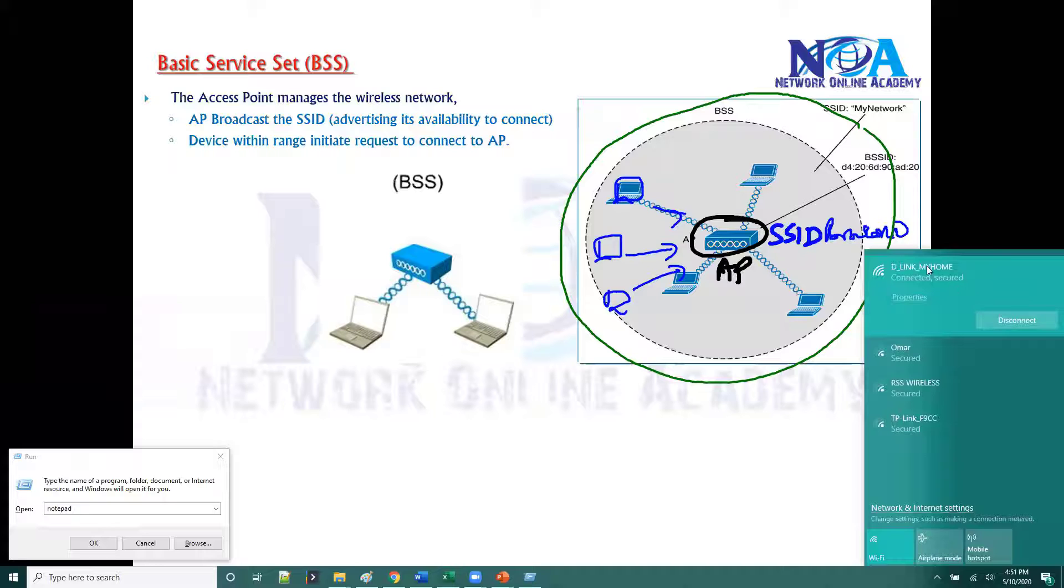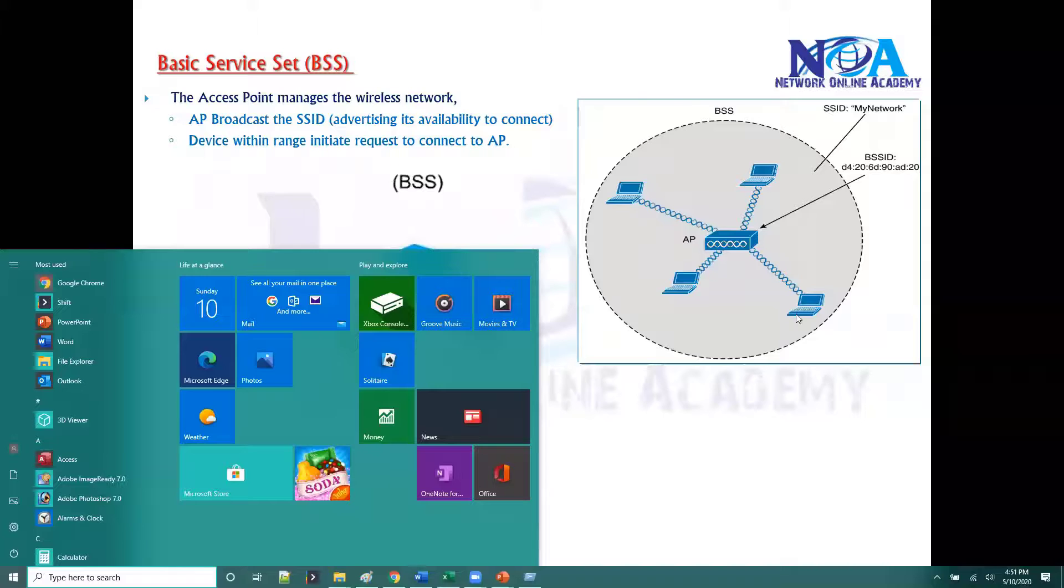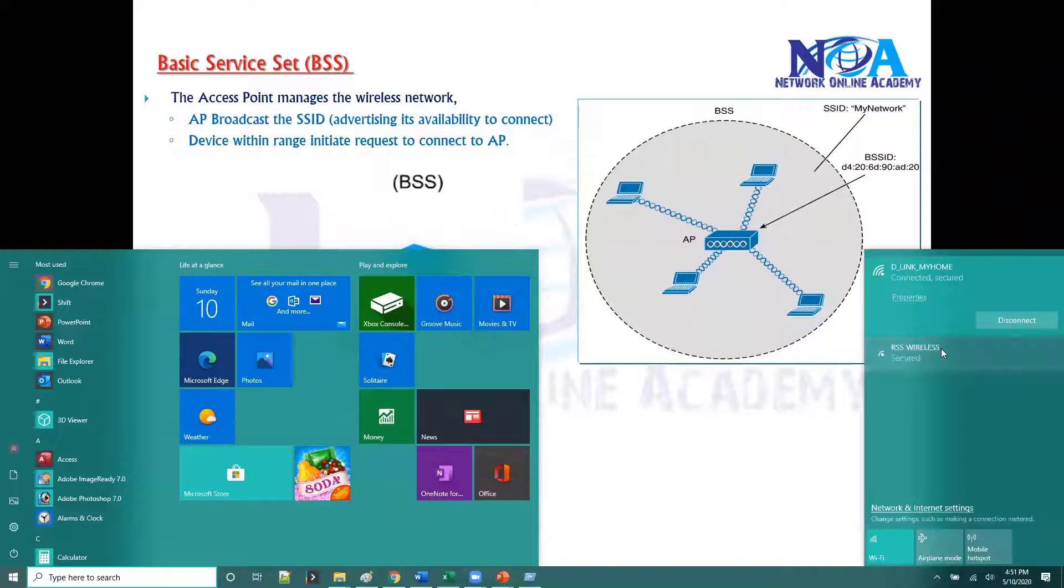You can also see some other SSIDs which are within my coverage area. Of course, everyone secures that with a password, so unless you know the password, you cannot connect. When you click on the link and say connect, it means we are trying to initiate a connection from the client side, trying to connect to that particular Wi-Fi network.